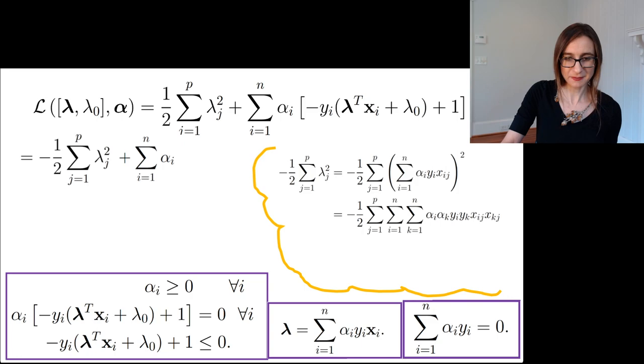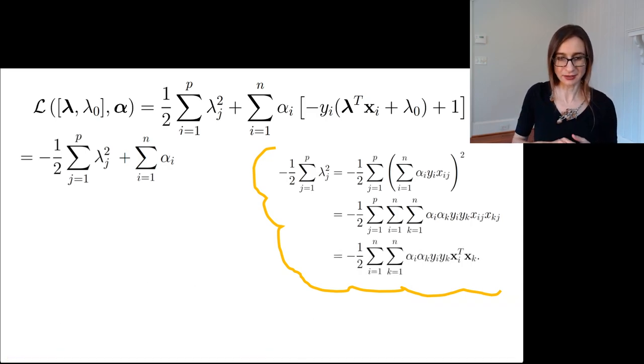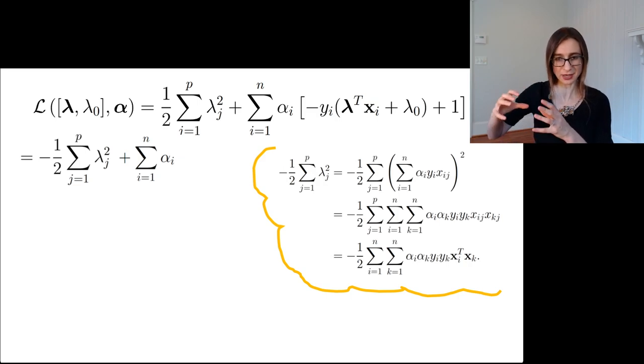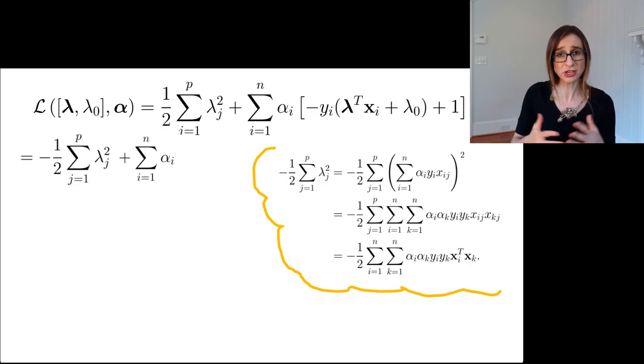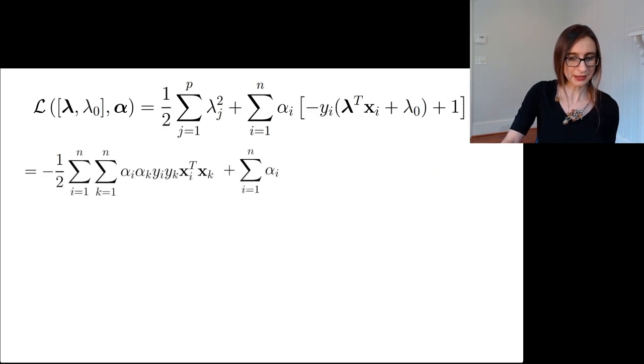In fact, you can see this is actually an inner product of x_i and x_k at the end there. That j sum is going to turn into that dot product - it's only changing notation. We're plugging that guy in, and now the Lagrangian is only in terms of alphas, which are the dual variables.